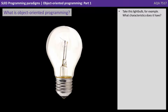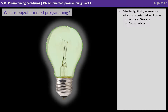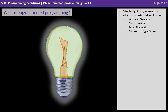Take this light bulb for example. What characteristics does it have? Well, it has a wattage — in this case a 40 watt light bulb. It has a colour, so white let's say. It has a type, so this is an old style filament light bulb. It has a connection type, so this is a screw fixture.